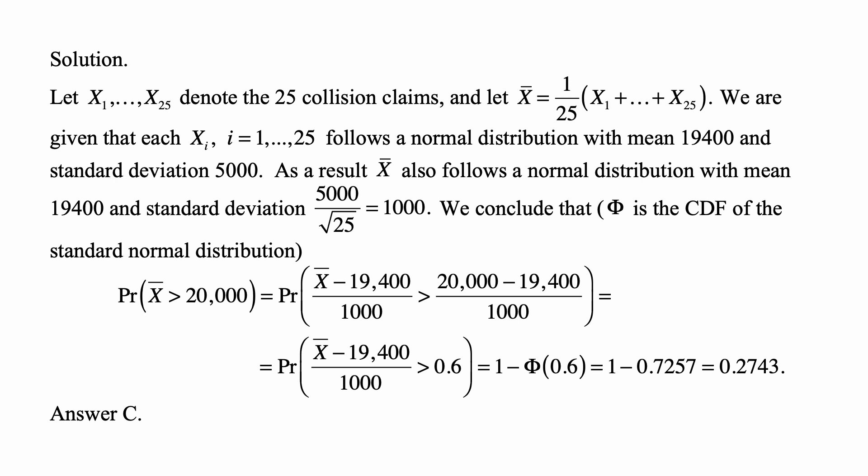So this is the probability that a standard normal random variable is greater than 0.6, which is 1 minus Φ of 0.6, where Φ is the CDF of a standard normal distribution. We can look up Φ of 0.6 in the table—that's 0.7257—or now you have a normal random variable calculator on the test.